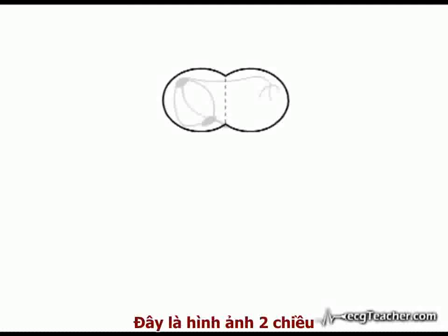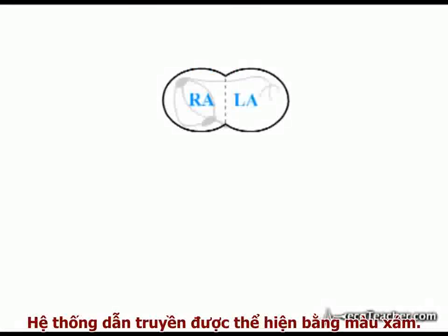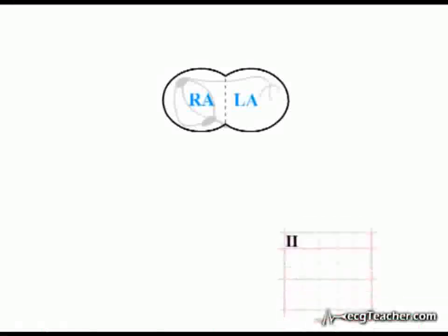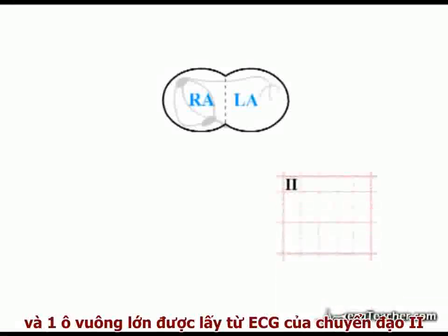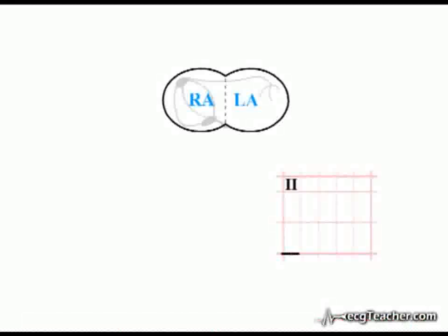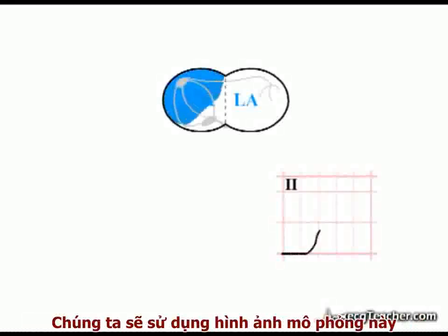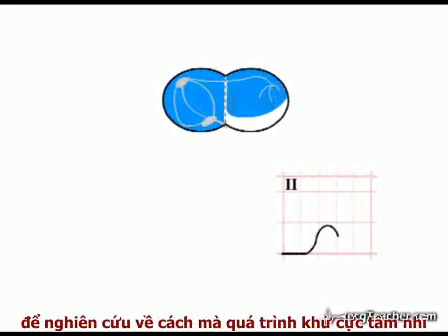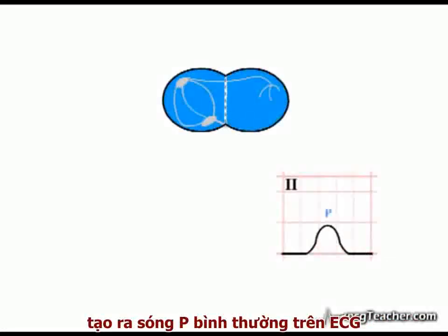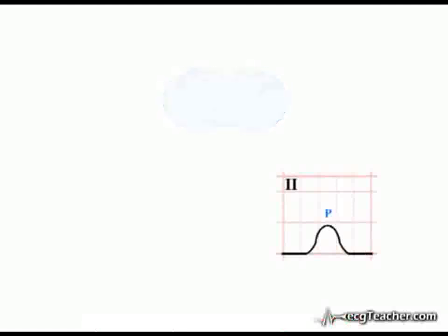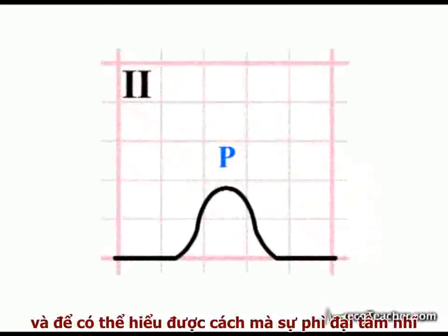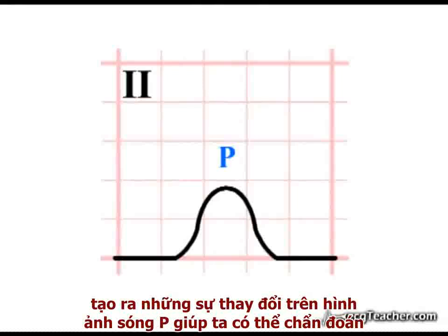This is a two-dimensional schematic showing the normal right and left atria, the cardiac conducting system outlined in grey, and a single large square taken from the ECG readout of Lead 2. We will use this schematic to study the manner in which atrial depolarization produces the normal P-wave on the ECG, and to understand how enlargement of the atrial chambers produces diagnostic changes in P-wave morphology.